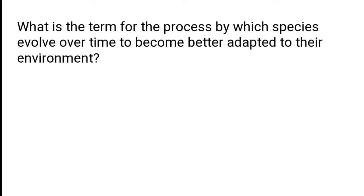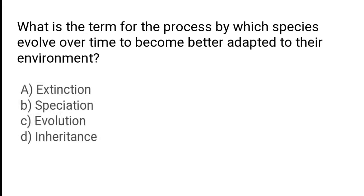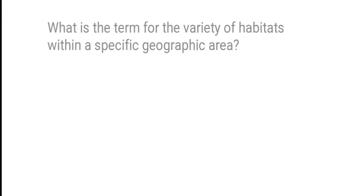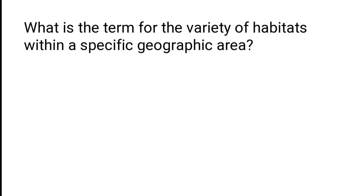What is the term for the process by which species evolve over time to become better adapted to their environment? A) Extinction, B) Speciation, C) Evolution, D) Inheritance. The correct answer is option C — evolution is the term for the process by which species evolve over time to become better adapted to their environment.